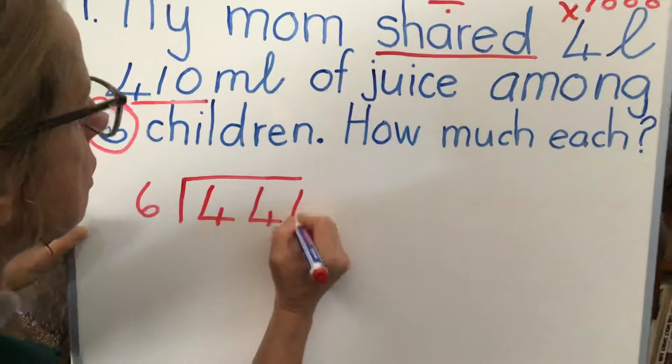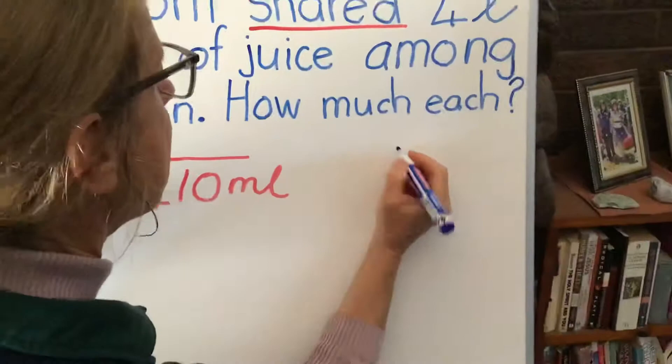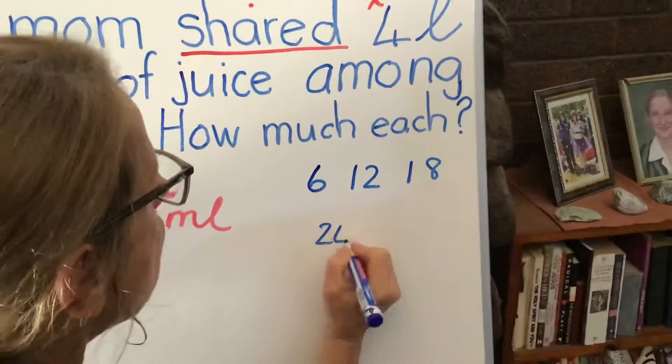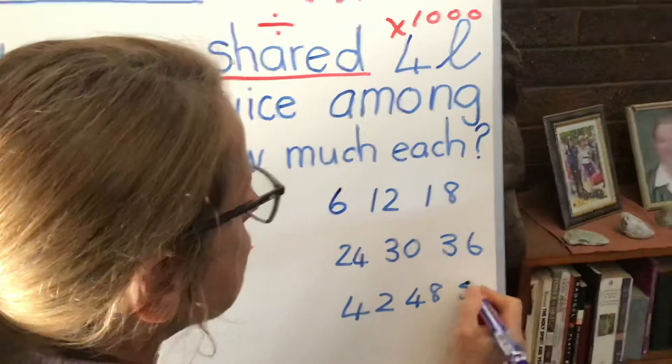Now we're going to write our multiples of 6 on the side here. So it's 6, 12, 18, 24, 30, sorry 36, 42, 48 and 54. We stop at 9 times 6, that's right.